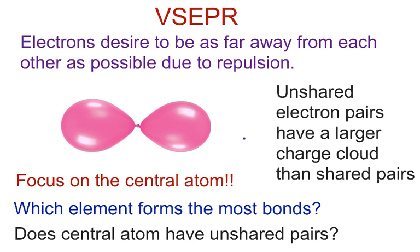We have the VSEPR theory. The V stands for valence, the S for shell, E for electron, P for pair, R for repulsion — valence shell electron pair repulsion. Simply put, it's basically the fact that electrons want to be as far apart from each other as possible, especially when they're in bonds.